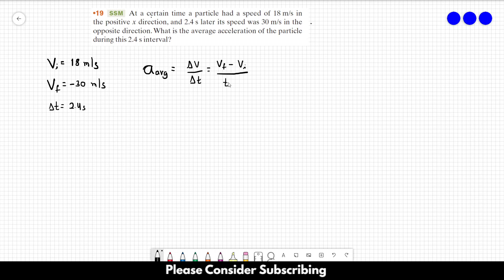This over the final t minus the initial t. The final v is minus 30 meters per second. Minus the initial v, which is 18. However, we have this minus sign over here. Over the delta t is just 2.4 seconds.